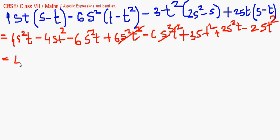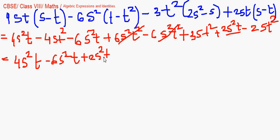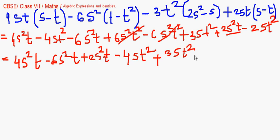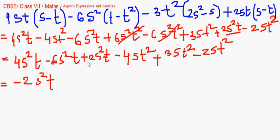Collecting like terms: we have 4s²t, minus 6s²t, and another plus 2s²t. For the st² terms, we have minus 4st². There is also plus 3s²t. So 4 minus 6 gives minus 2s²t, and with the additional plus 2s²t, the s²t terms cancel to zero.